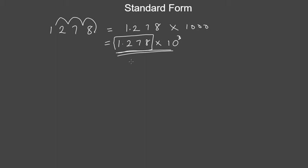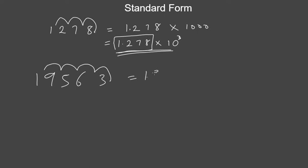For example, 19563 in standard form: assume there is a decimal point after the last digit. Count how many times you need to move — that's four places. So the answer is 1.9563 times ten to the power of four.